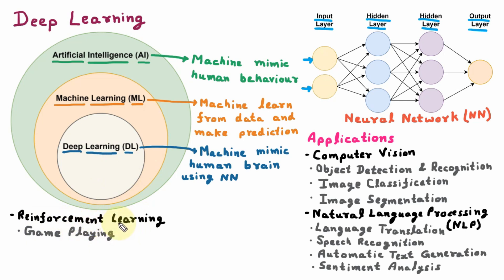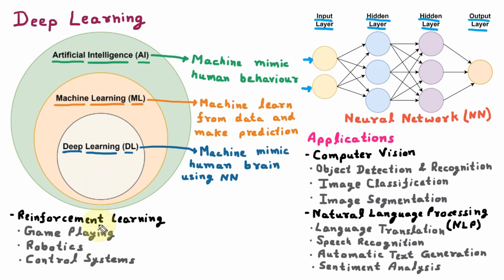The next thing coming under Reinforcement Learning is Robotics. With the help of Deep Learning, robots can take complex decisions. The next application coming under Reinforcement Learning is Control Systems — Deep Learning is used to design very complex control systems, like Traffic Management and Power Grid Management. These three are the applications of Deep Learning which come under Reinforcement Learning.